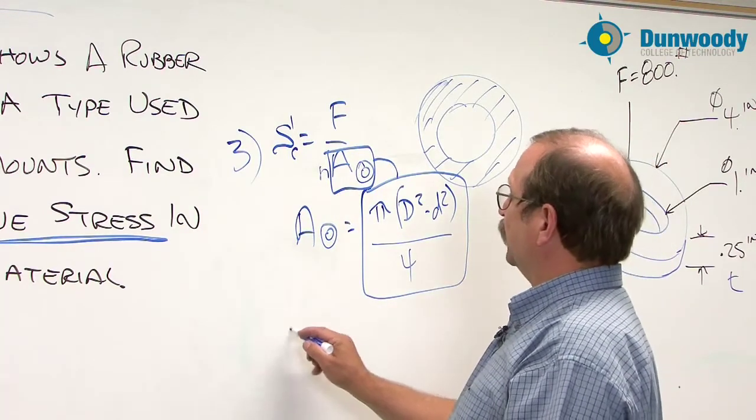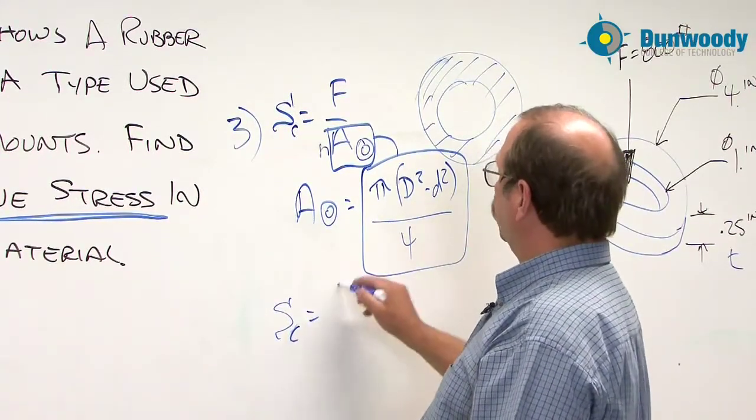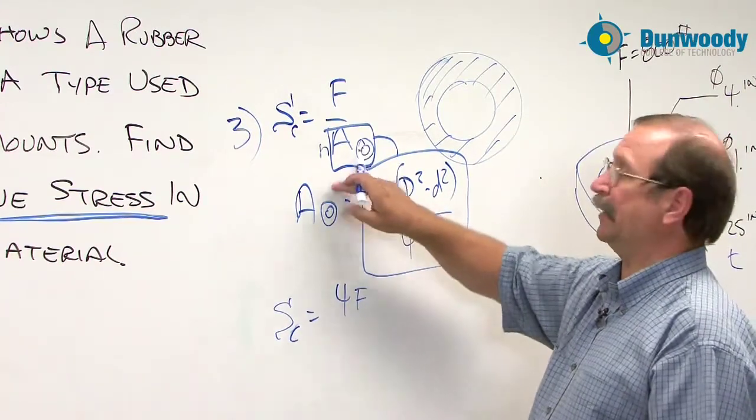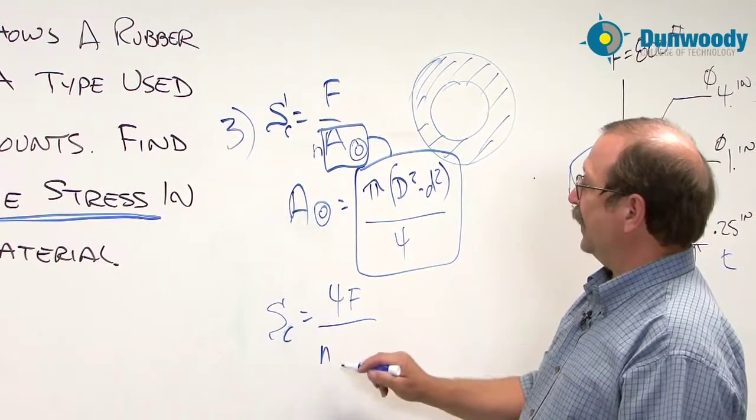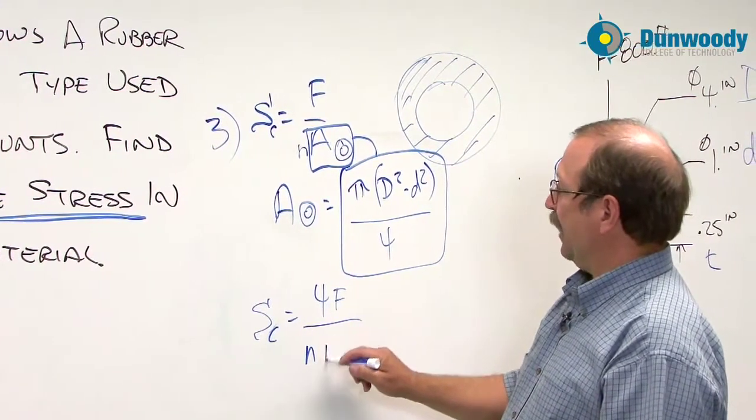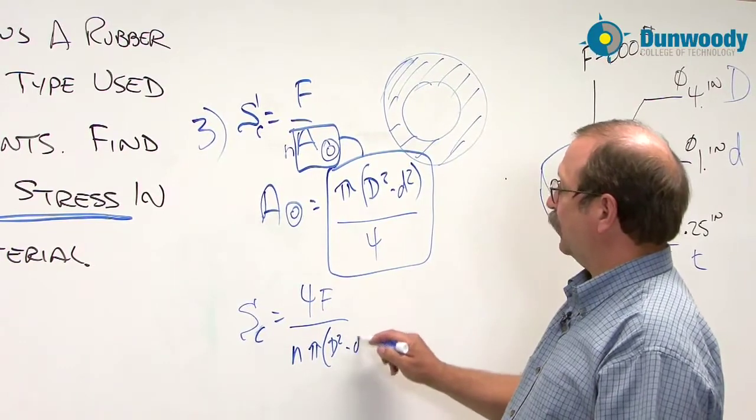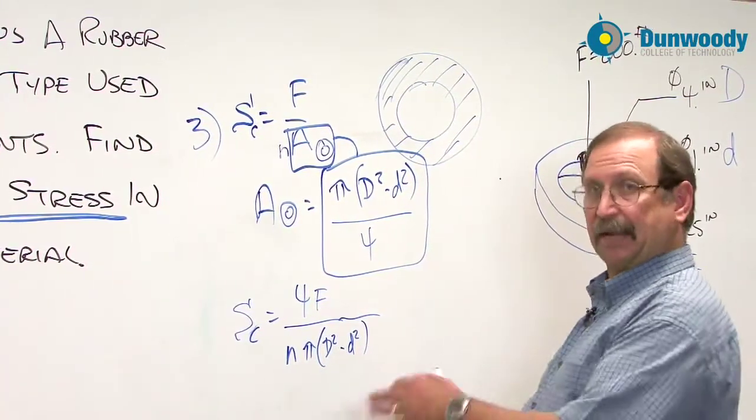So taking a little bit of a jump, we've got S sub C is equal to 4F. This four in the denominator of a denominator will come up into the numerator. Divided by N and then we have pi times the quantity capital D squared minus small d squared. And that's our next step in the formula.